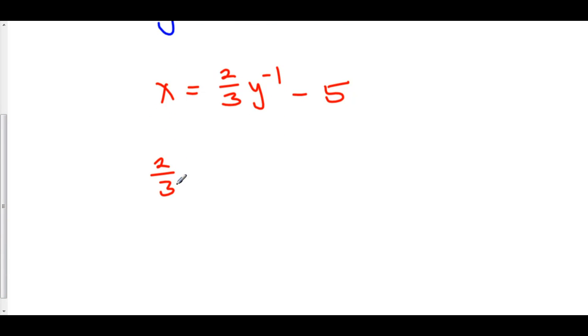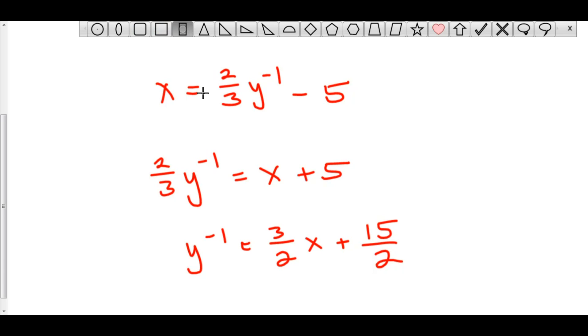We can add 5 to both sides. So, we have 2/3 y inverse is equal to x plus 5. Now, we can multiply both sides by 3/2, and we have y inverse is equal to 3/2 x plus 15/2.